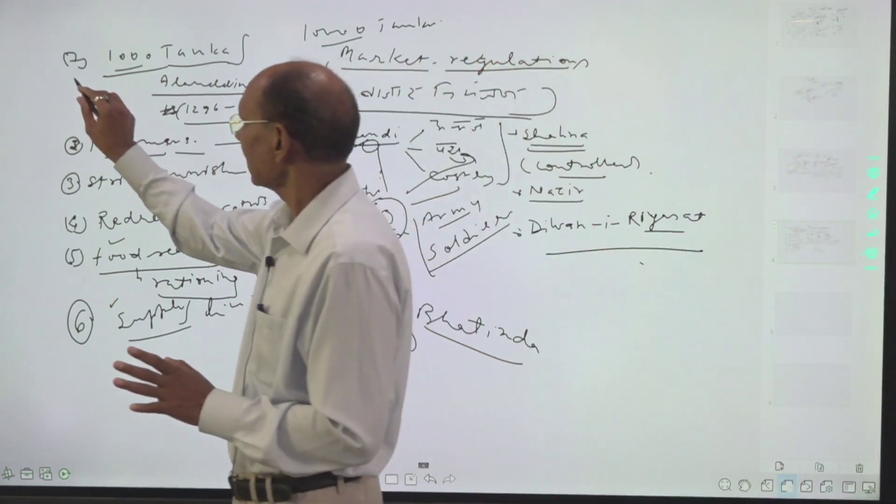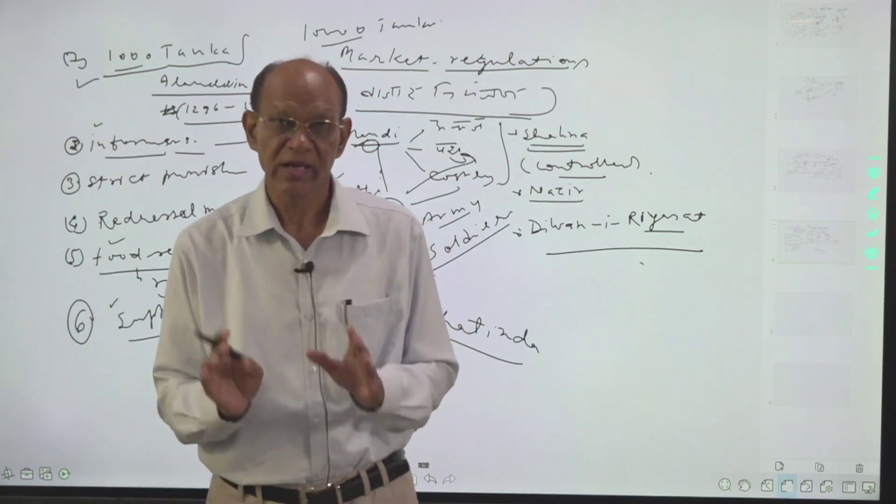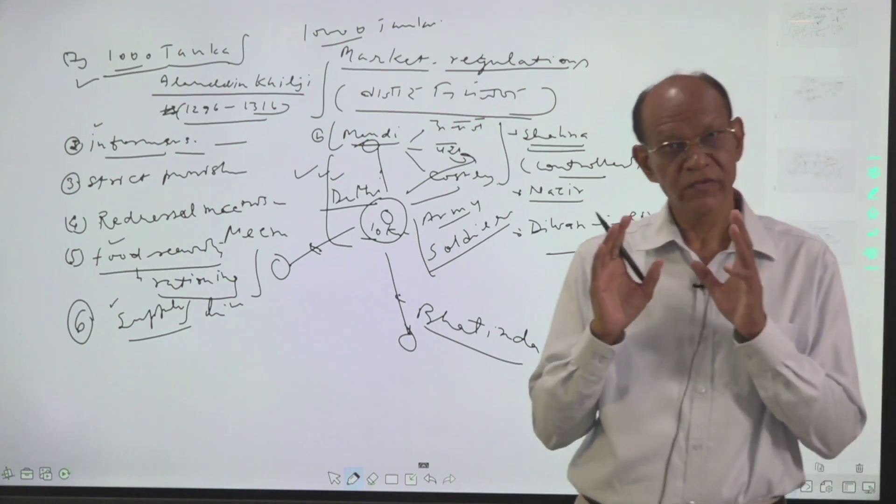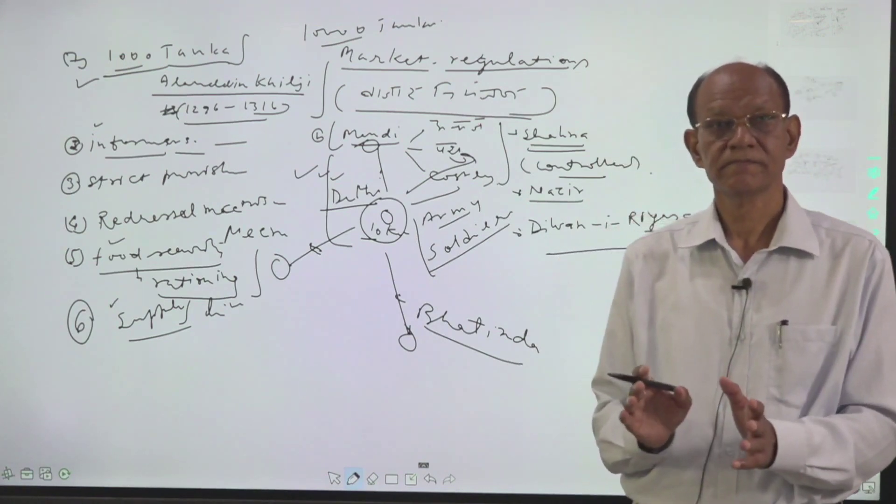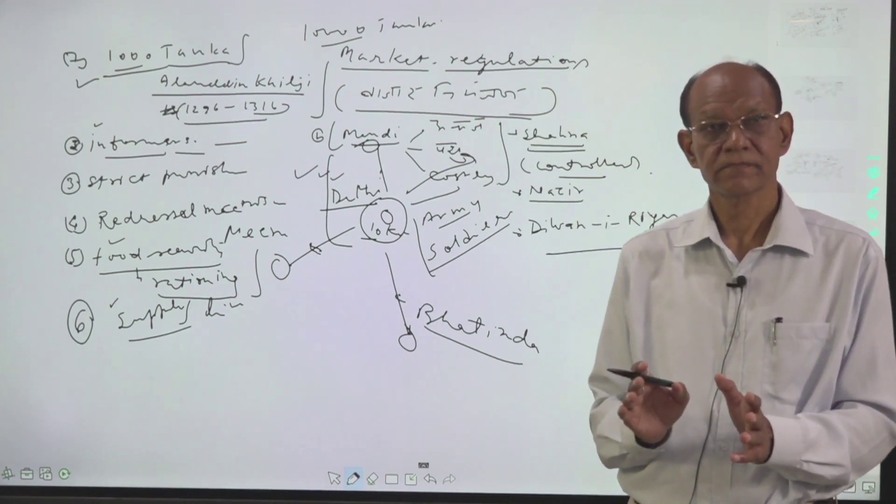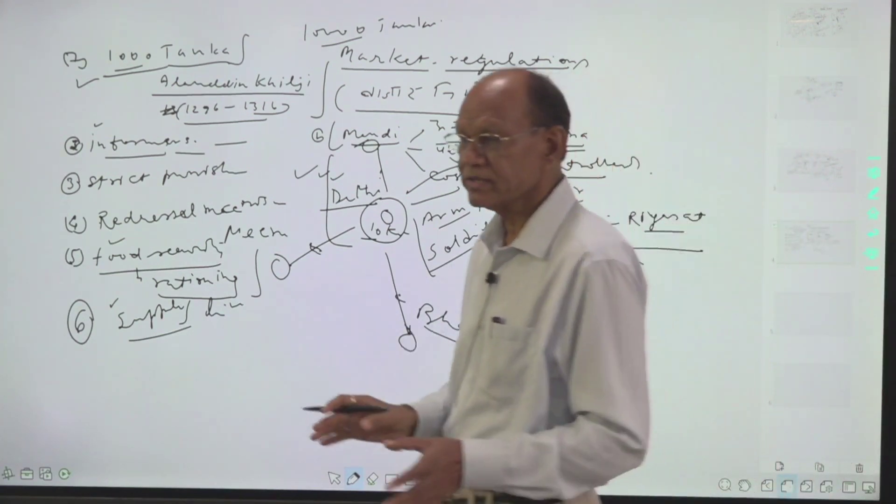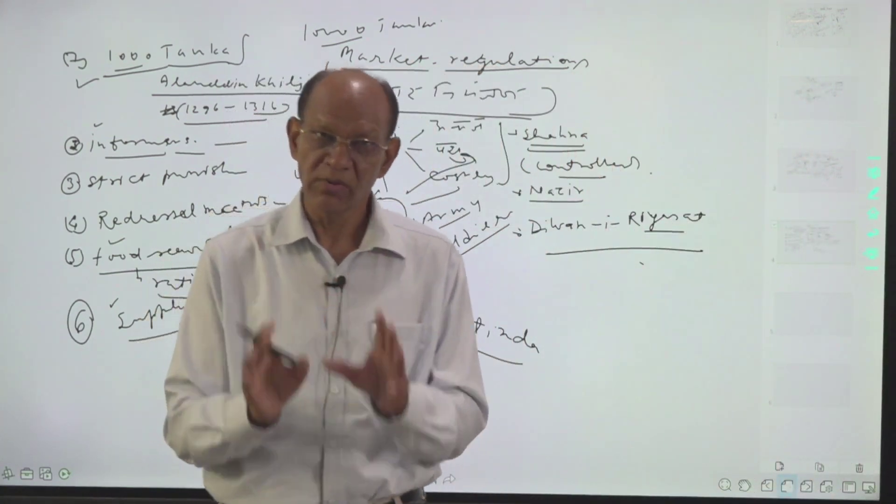This is a very interesting point. Market regulations of Alauddin Khilji was a wonder of the age in which he lived. There was perfect control over black marketing, profiteering, and speculation.